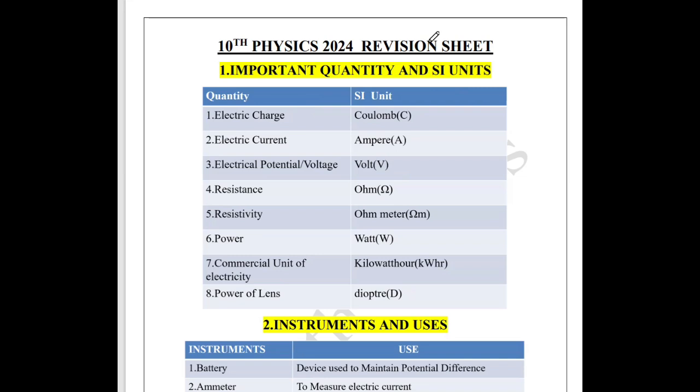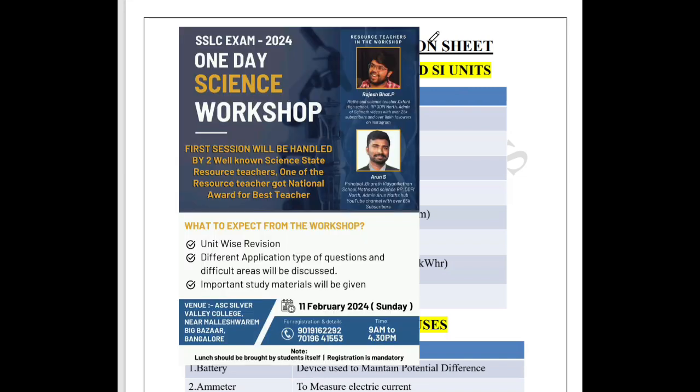This Sunday, that is February 11th, we're organizing a workshop in Bangalore, near Malleswaram, at ASC Silver Valley College. It will be from 9 to 4:30 — an entire day workshop — where myself and Arun Sir from the Arun MagSub channel, who is also principal of Bharati Vidyaniketan School, will be present. We're inviting two very important state resource teachers for this workshop, where they'll be handling chapter-wise revision.